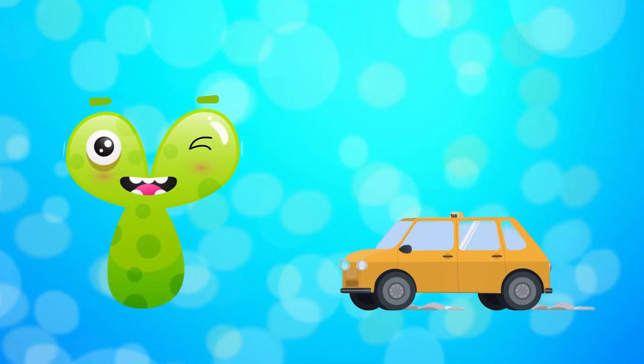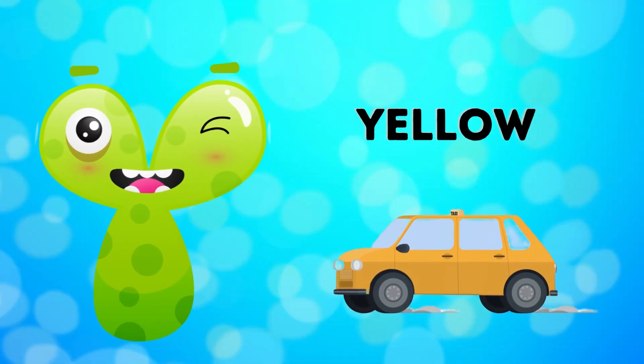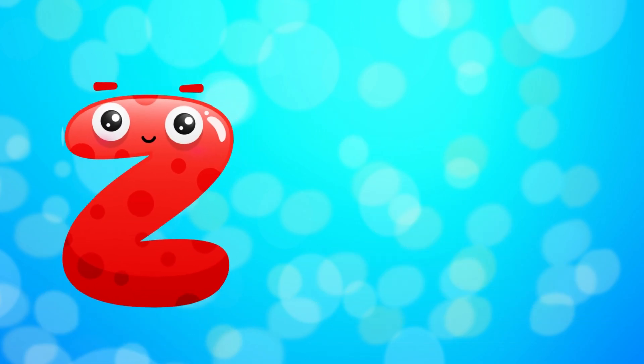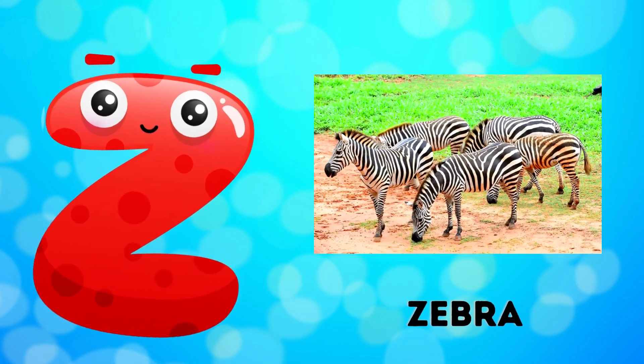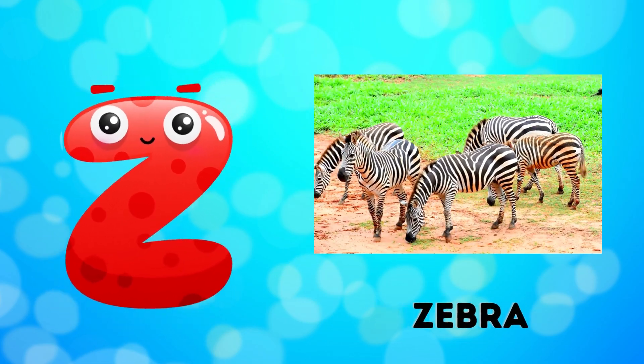Y is for yellow, y-y-yellow. Z is for zebra, z-z-zebra.